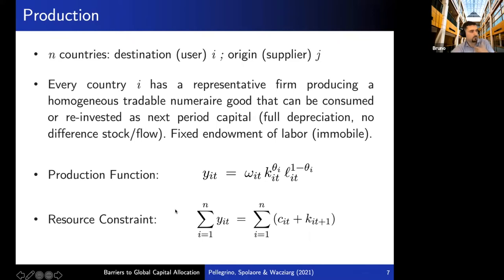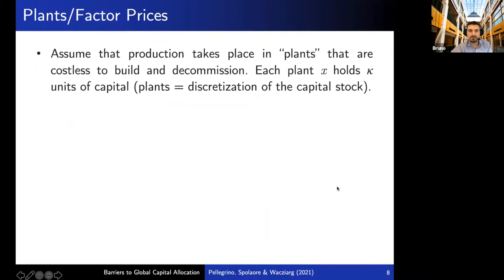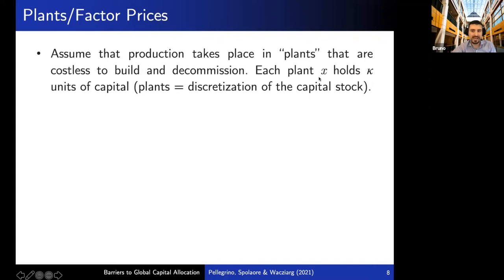The global resource constraint says total output at time t must equal current period consumption summed across all countries, plus next period capital. On the production side, we make one non-standard tweak: production takes place inside entities we call plants that are costless to build and decommission. Each plant X holds kappa units of capital, so plants are simply a discretization of the capital stock — an integer version of capital stock. The return to capital is denoted R, determined as usual, and W is the wage rate.